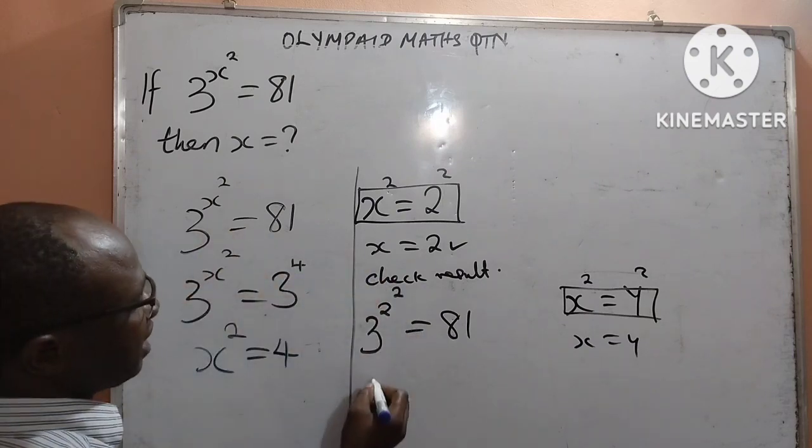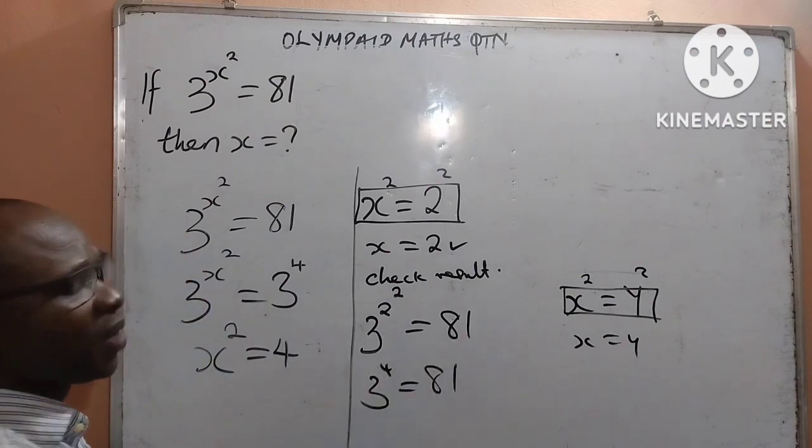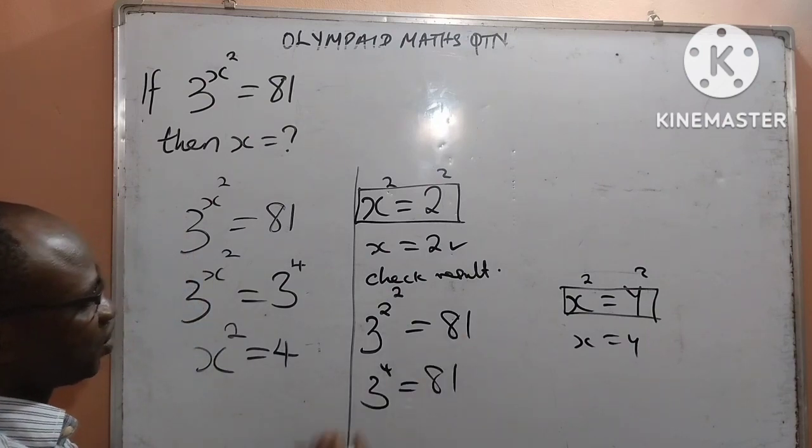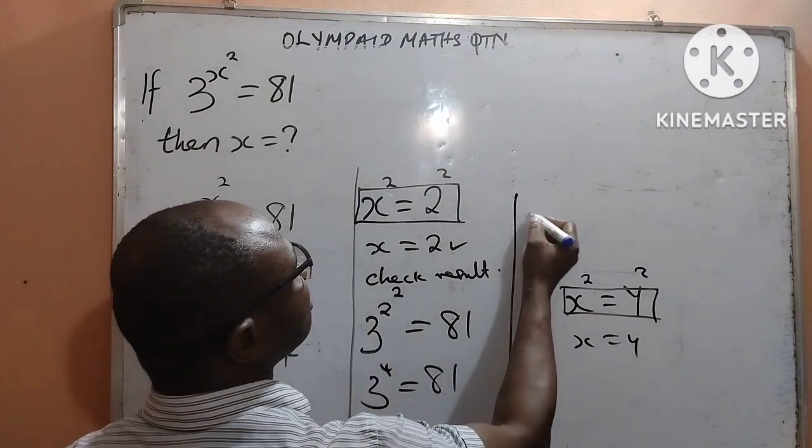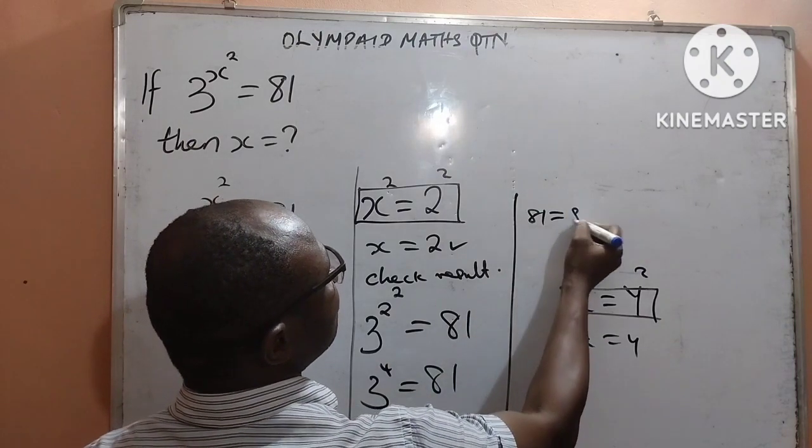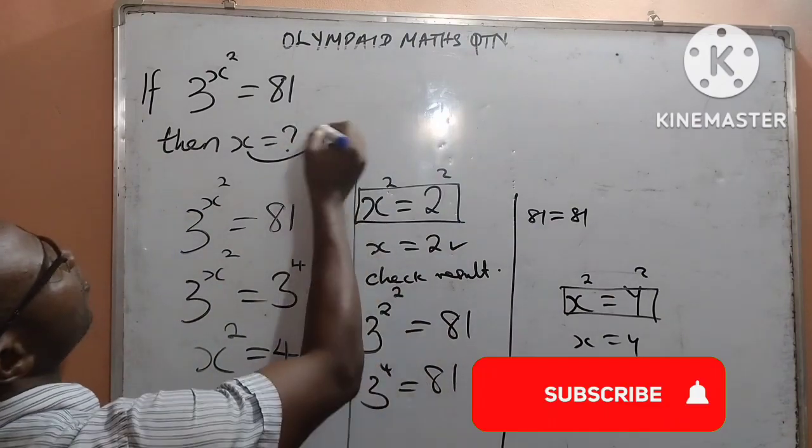2 to the power of 2 is already 4, and that is 3 to the power of 4 is equal to 81. And from what we did from the beginning, you saw that 3 to the power of 4 is equal to 81. So in conclusion, 81 is equal to 81, making our answer here to be equal to 2.